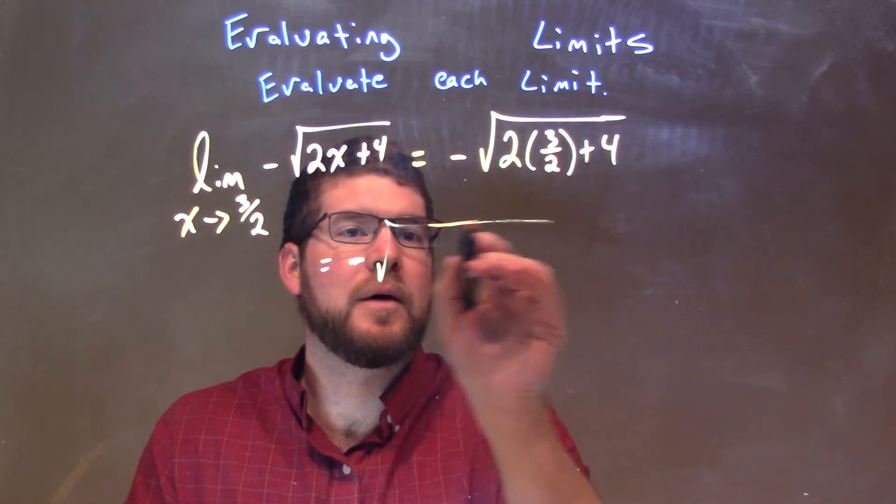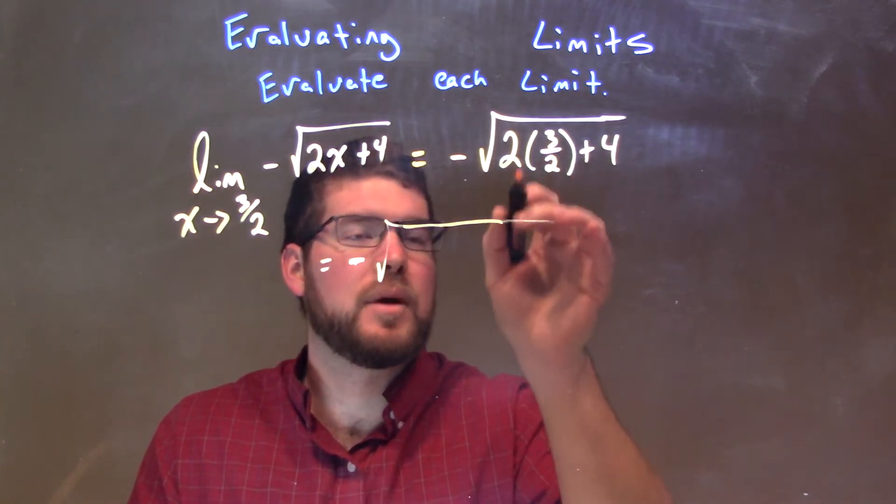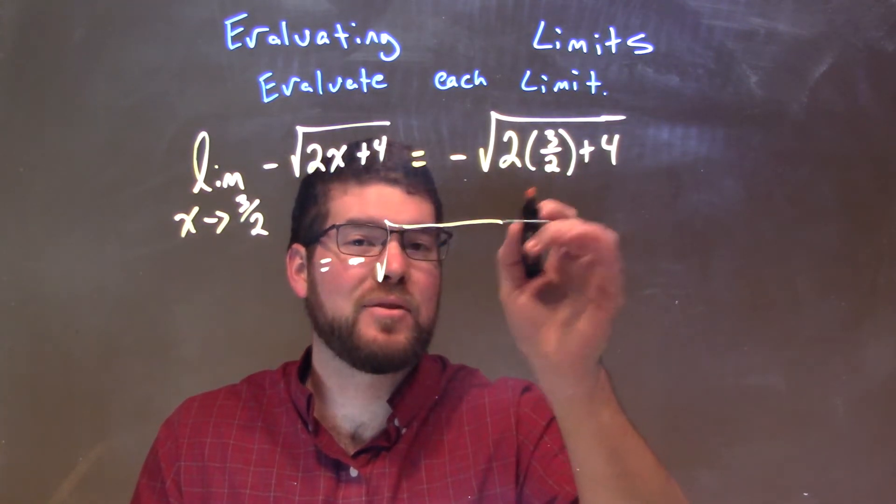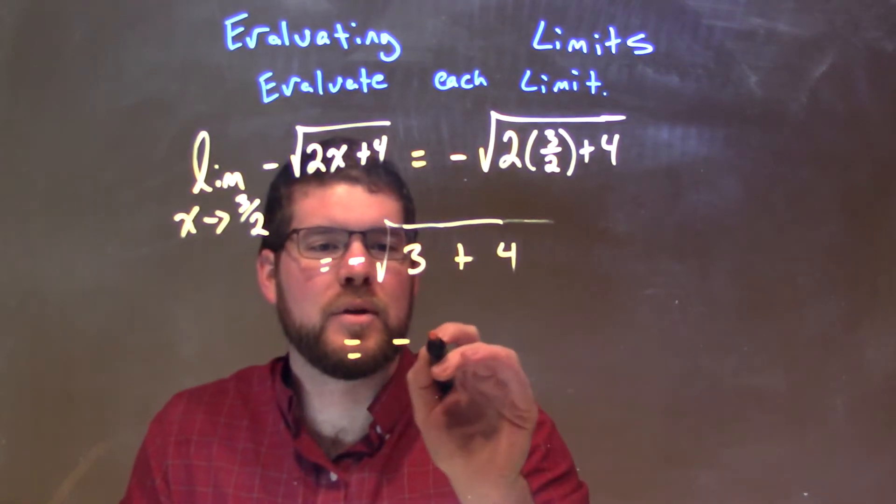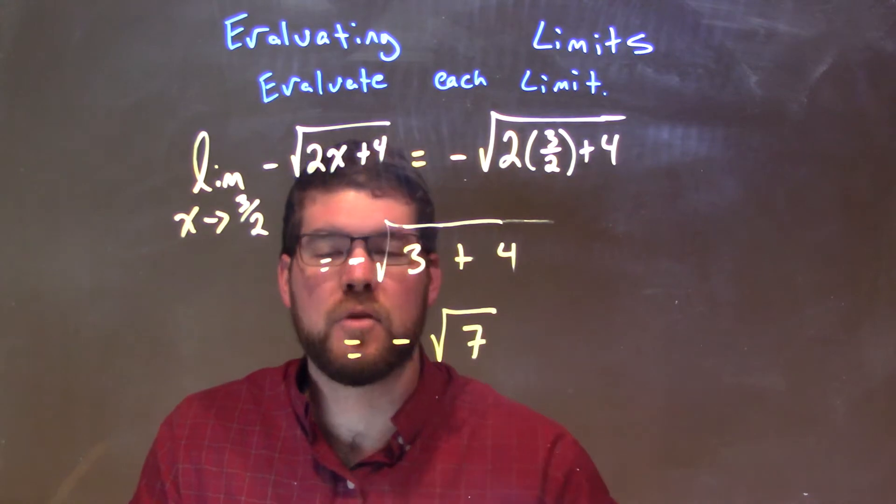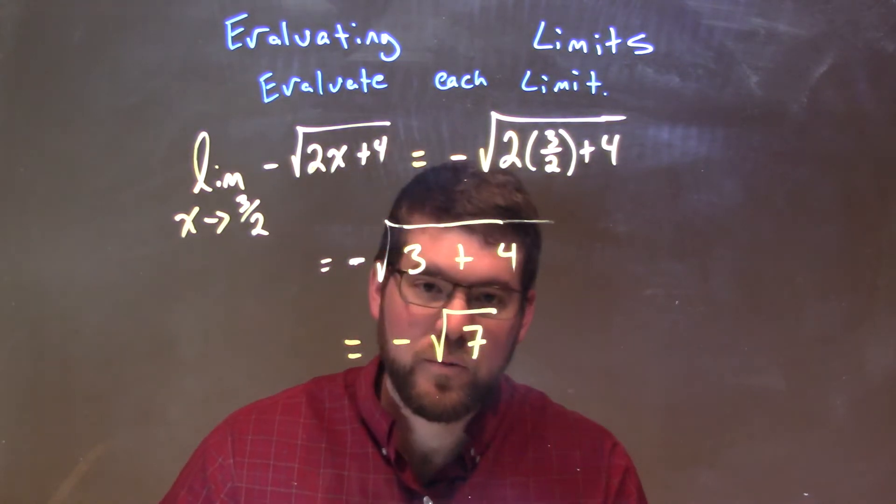The square root of, well, 3/2 times 2, or 2 times 3/2. The 2's cancel, leaving us with just 3, plus 4, and 3 plus 4 simply is 7.